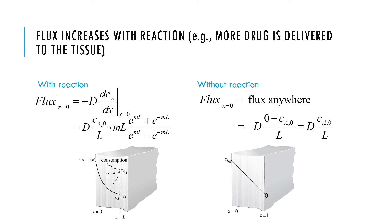For small values of mL, this ratio approaches 1, and for larger values of mL, this is as large as mL is. Which means this fraction is always 1 or higher, which means the flux here is always at least equal to the flux without reaction or higher.